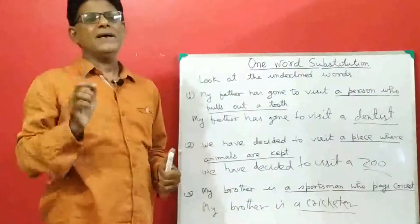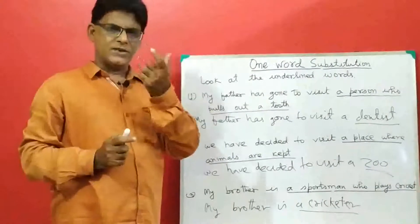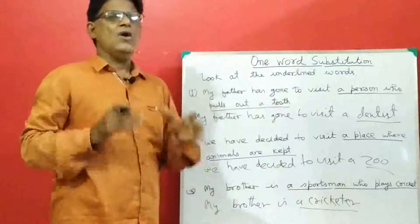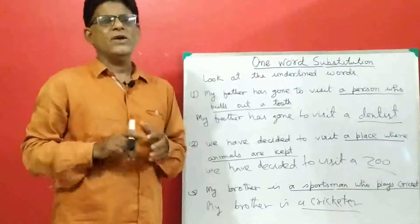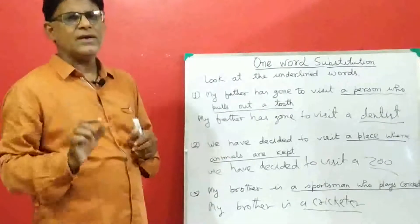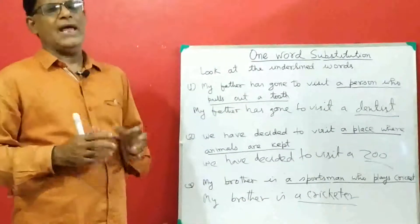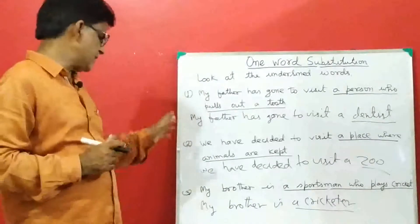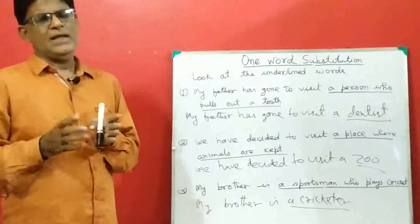This single word is called one word substitution. So what is one word substitution? One word substitution is the process in which we put a single word in place of a group of words, and the meaning remains the same. These are the three examples.